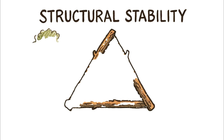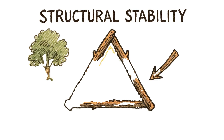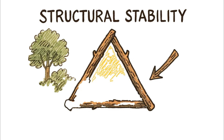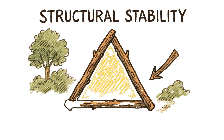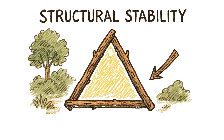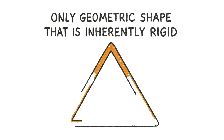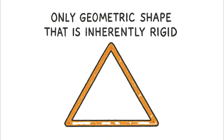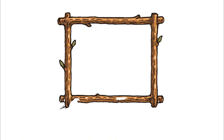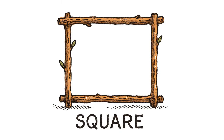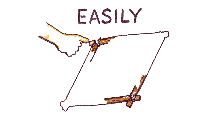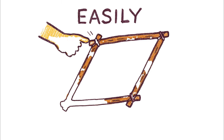The first concept you need to master is structural stability, and it all comes down to one shape: the triangle. It is the only geometric shape that is inherently rigid. Picture a simple square frame made of four branches — if you push on one of the top corners, the whole thing easily deforms.